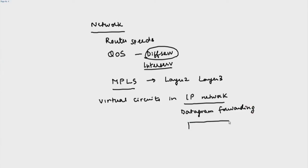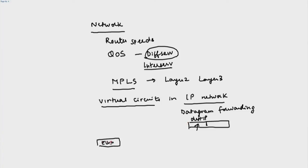In datagram forwarding, a packet has a destination IP address, and the router looks at that address to decide which interface to forward it on — there is no concept of a circuit. What MPLS does is impose a virtual circuit within this IP network by attaching a tag. The packet structure becomes: Ethernet header | MPLS tag | IP header. This MPLS tag is inserted between Ethernet and IP and is very similar to a virtual circuit label — it is a label used for forwarding.